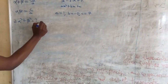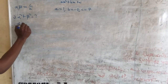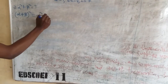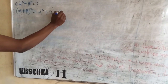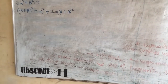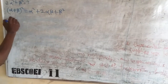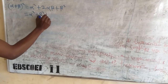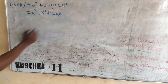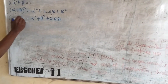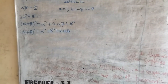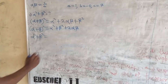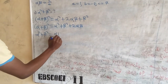We know that (alpha plus beta) squared is equal to alpha squared plus 2 alpha beta plus beta squared. So, now, we are going to make alpha squared plus beta squared the subject, which gives us alpha squared plus beta squared equals (alpha plus beta) squared minus 2 alpha beta.